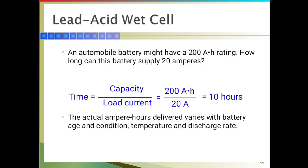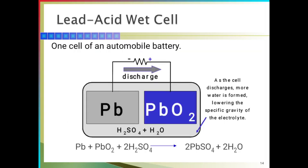How to calculate how long a lead acid battery will work: an automobile battery might have a 200 ampere-hour rating. How long can this battery supply 20 amperes? Time = capacity divided by load current, which equals 200 Ah divided by 20 A, so it works for 10 hours. The actual ampere-hours delivered varies with battery age, condition, temperature, and discharging rate. During discharging, lead and lead oxide in the presence of sulfuric acid form lead sulfate. As the cell discharges, more water is formed, lowering the specific gravity of the electrolyte.